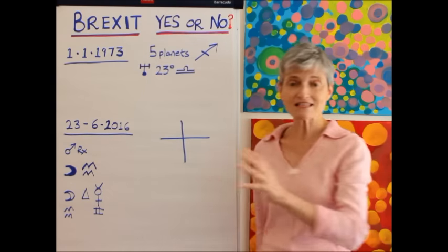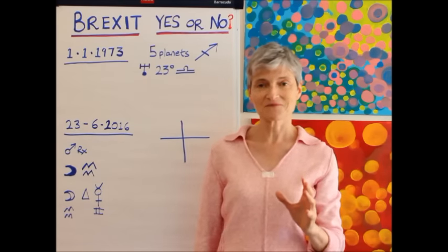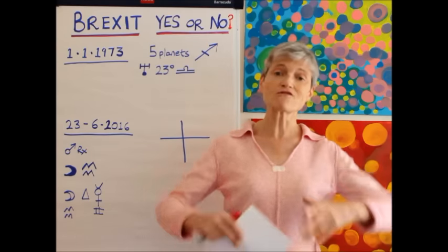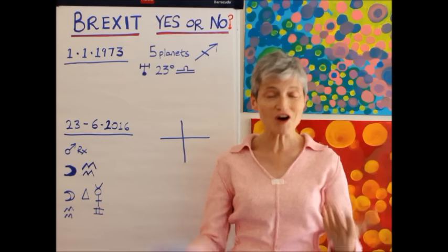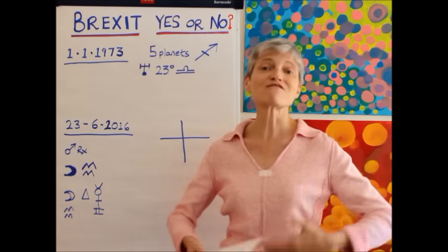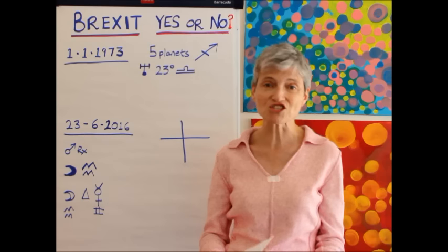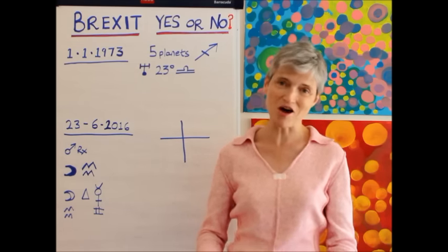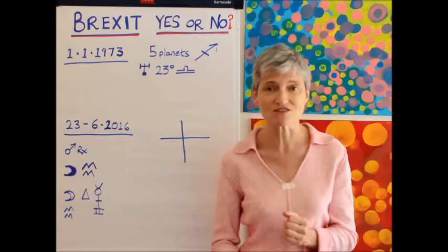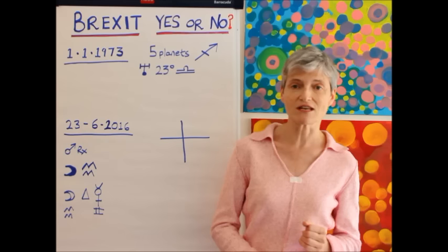Let's look at this first one when Britain joined the EU. We had five planets in Sagittarius. So although it was a Capricorn Sun time, it was a time of reaching out, going beyond our boundaries. Sagittarius would rule foreign trade, foreign connections, international business, opening up to those possibilities. So it had some really good intentions on the date of joining.